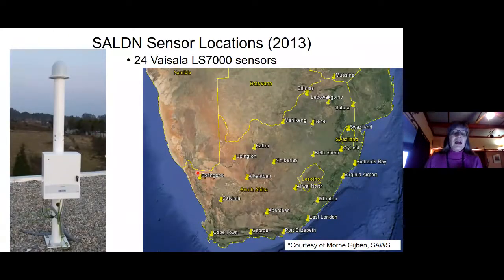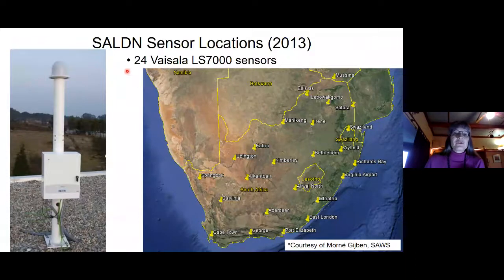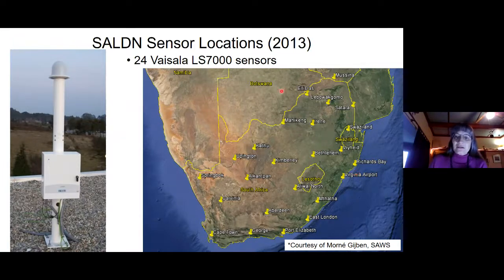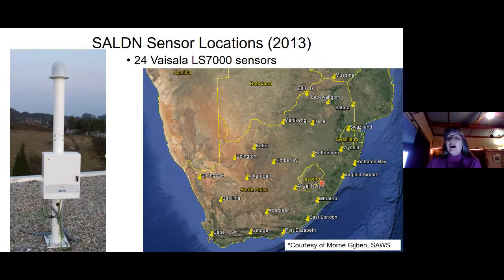How do we detect lightning? It turns out there's a network of lightning sensors all over South Africa — 24 different sensors and they're not very big. This is a rooftop installation of a sensor courtesy of Karina, and the lightning sensors have a good distribution throughout the country. You can see that for our study in Lesotho we've got a good distribution around it.